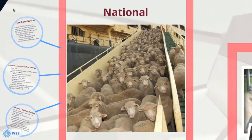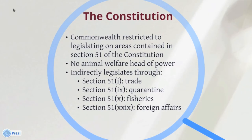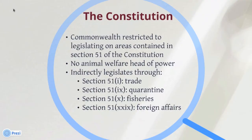Under the Australian federal system of government, the Commonwealth is restricted to legislating on areas that are specified in the Constitution — referred to as heads of power. All other areas are left to the states and territories to legislate on. The Commonwealth heads of power are located in Section 51 of the Constitution, and there is no specific head of power for animal welfare.